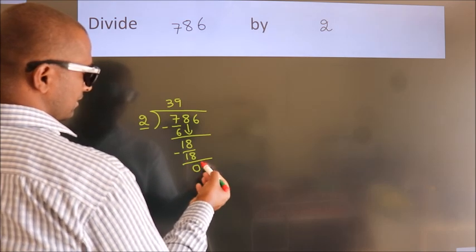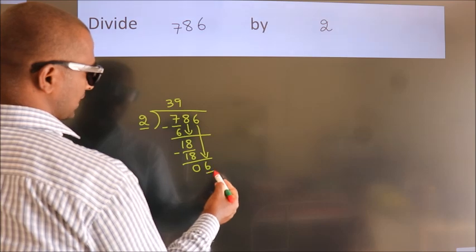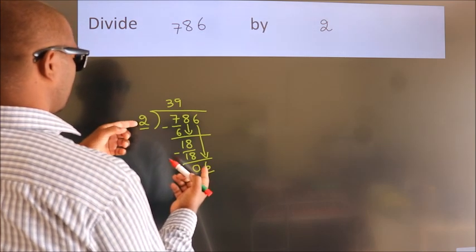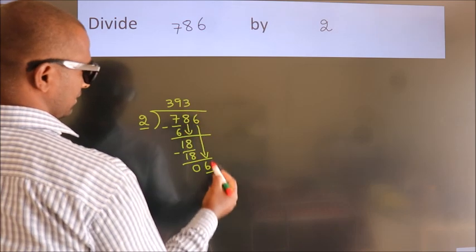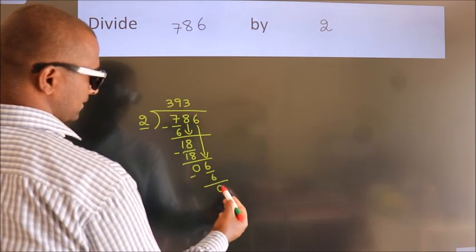After this, bring down the beside number. So 6 down. So 6. When do we get 6? In 2 table, 2 times 3 is 6. Now we subtract. We get 0.